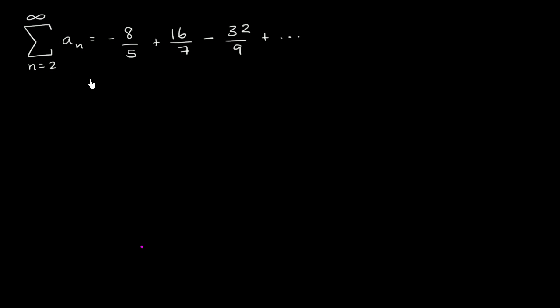So the first thing that you might realize is this is the number that we're going to get. a sub 2 is equal to negative 8 fifths. a sub 3 is equal to 16 over 7. a sub 4 is equal to negative 32 over 9.